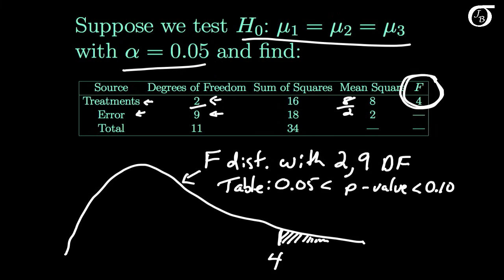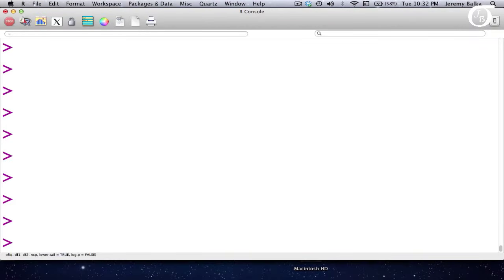Now if we wanted to get a little bit more precise than that, we'd have to use some software. So let's go to R and find that value. Here in R the command PF gives the area to the left of the value you put in. So if we put in our value of 4, the degrees of freedom of 2 in the numerator and 9 in the denominator,